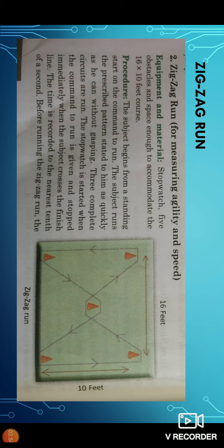Procedure: The subject begins from a standing start on the command to run. The subject runs the prescribed pattern as quickly as he can without grasping. Three complete circuits are run. The stopwatch is started when the command to run is given and stopped immediately when the subject crosses the finishing line.